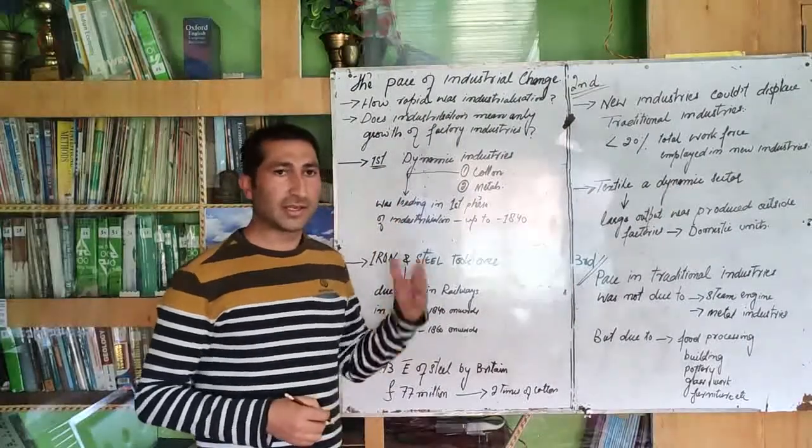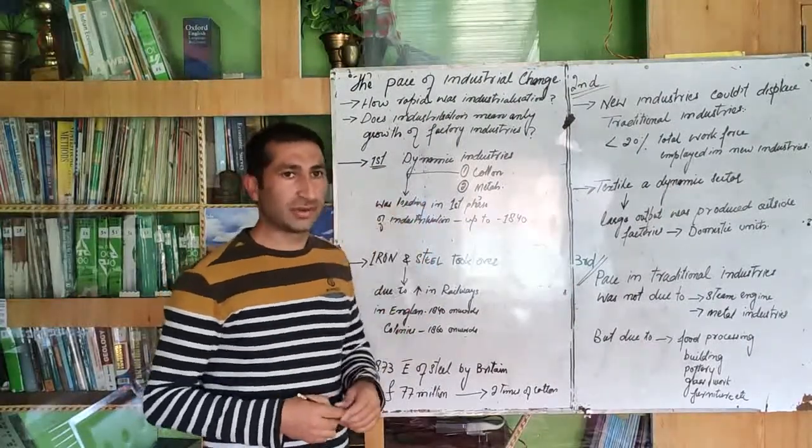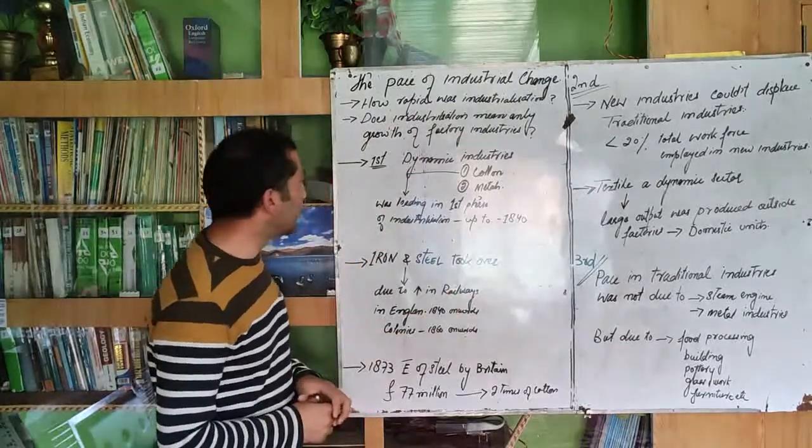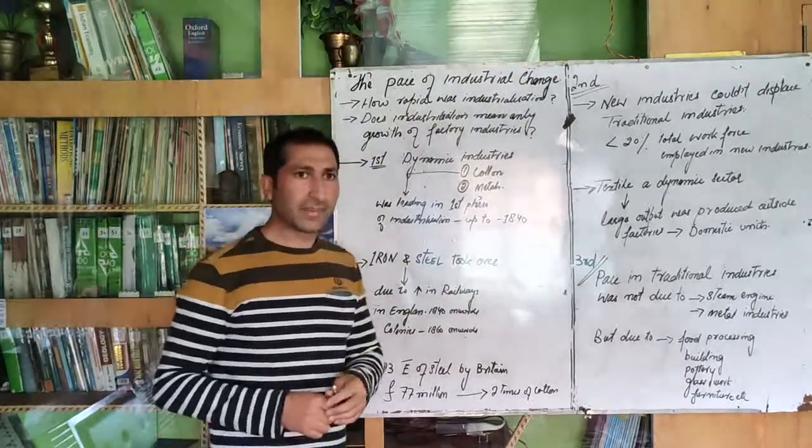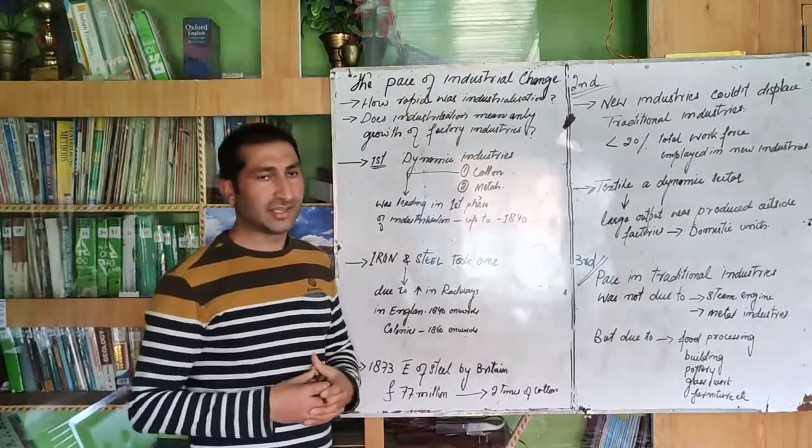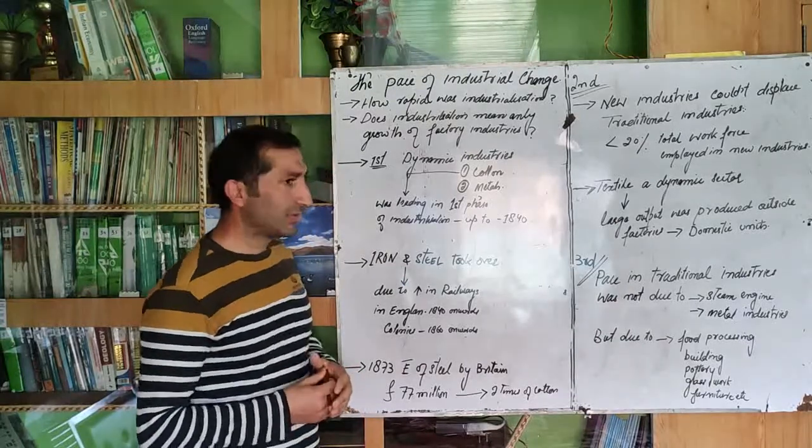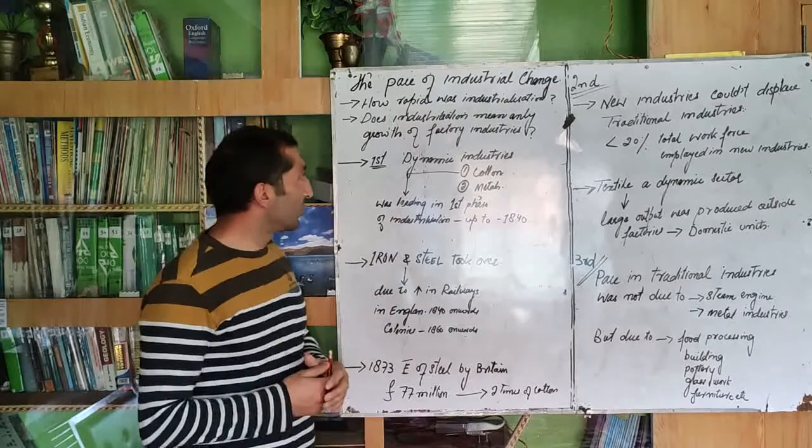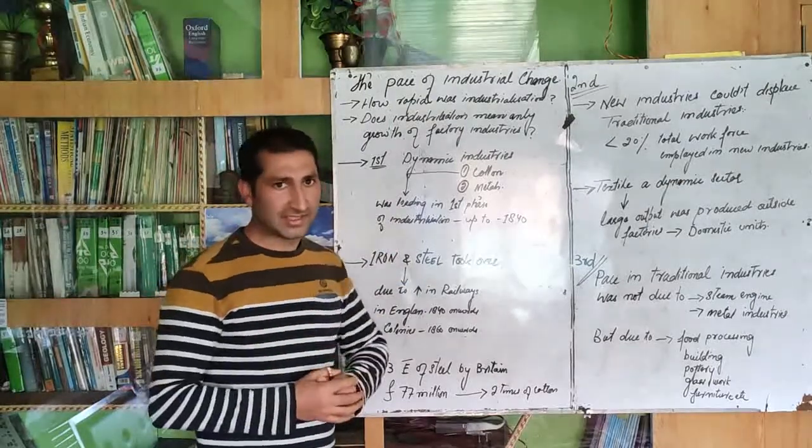We will try to answer these questions in this lecture. So basically after the start of the first factory in 1730 in England, we have seen how it started. Now we will be going further to discuss the dynamic industries. There were two dynamic industries in England.